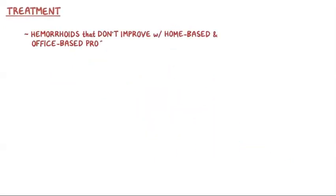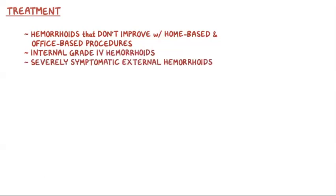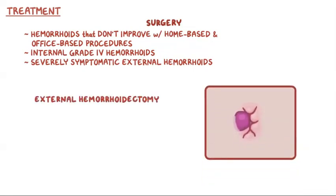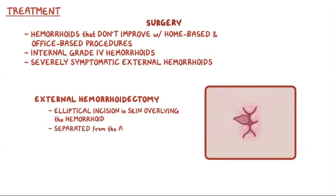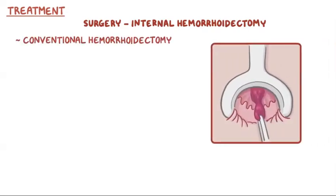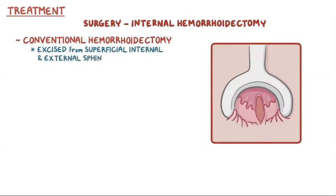For hemorrhoids that don't improve with home-based and office-based procedures, and for internal grade 4 hemorrhoids or severely symptomatic external hemorrhoids, surgery may be needed. An external hemorrhoidectomy is done by making an elliptical incision in the skin overlying the hemorrhoid. The incision goes around the hemorrhoid and is carefully separated from the anal sphincter to avoid injury. An internal hemorrhoidectomy can be done in a few different ways. In a conventional hemorrhoidectomy, the hemorrhoid is carefully excised from the superficial internal and external sphincter muscles.